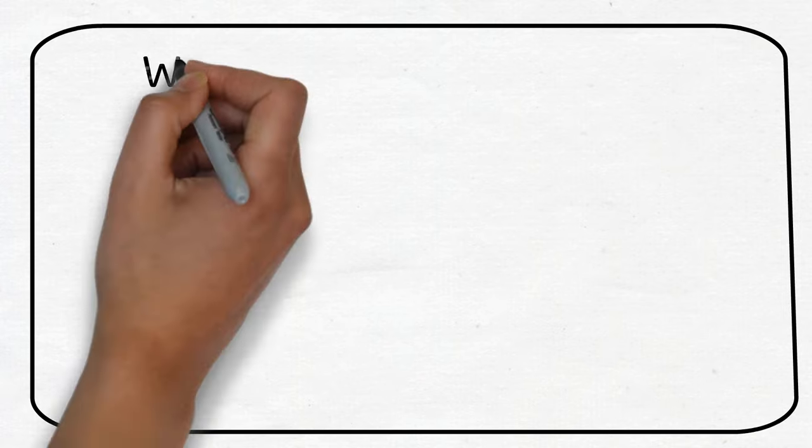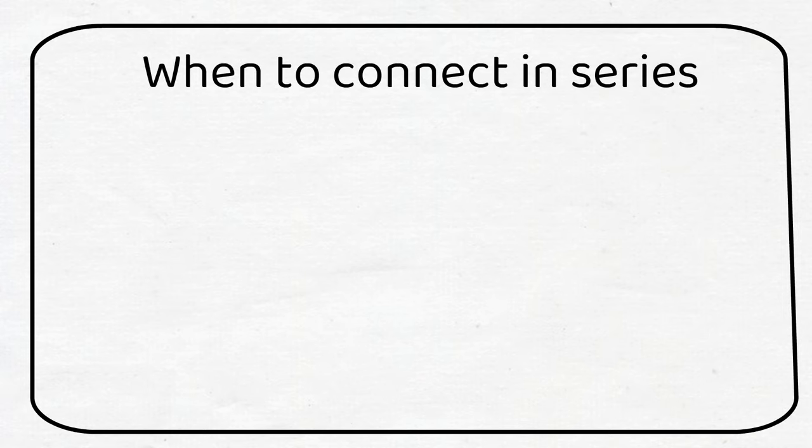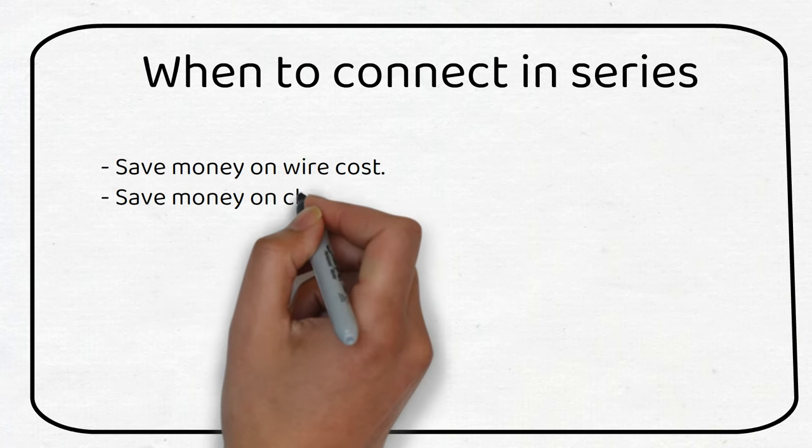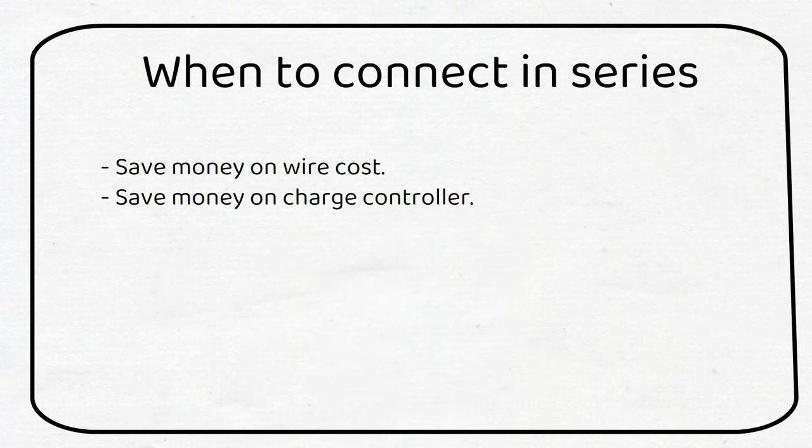When we connect our battery in series, the voltage will increase. If we have a higher voltage battery we can decrease the thickness of the wire. This will save us money on wiring cost. It will also be cheaper for a charge controller.